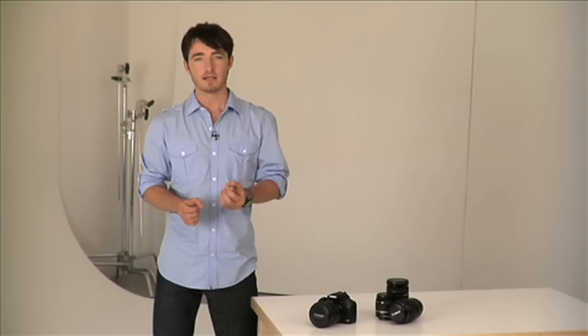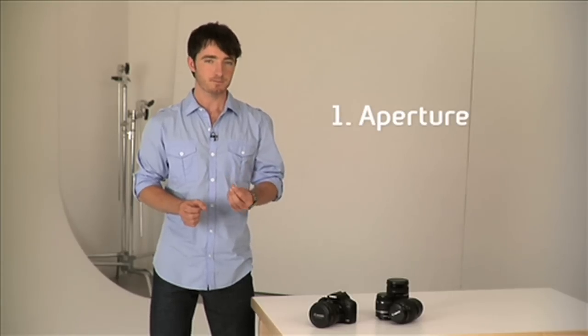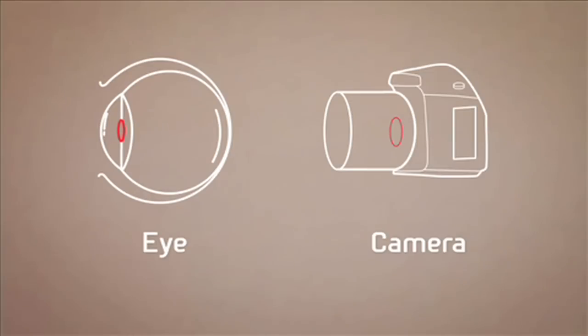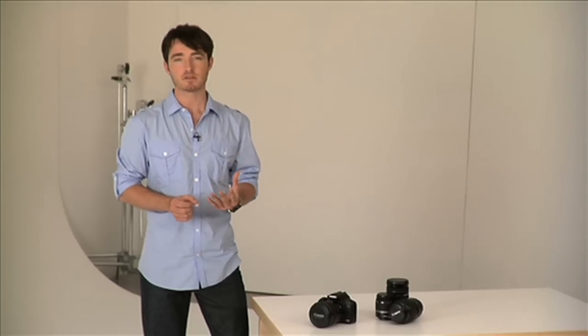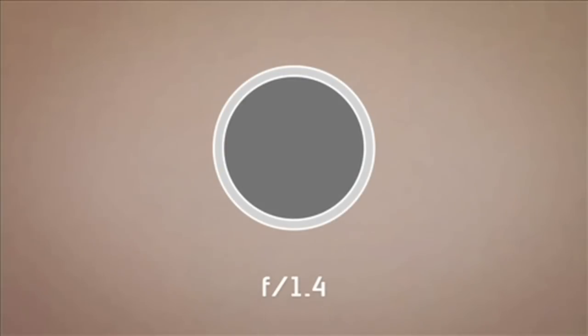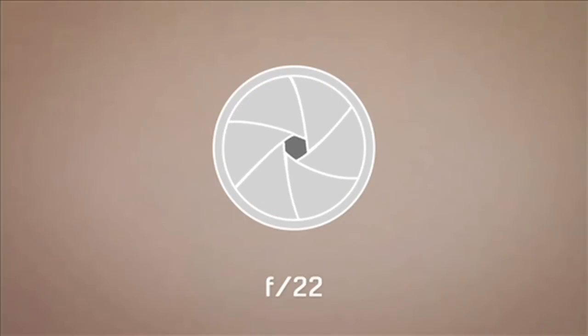A good way to think of this is by comparing them to the way your eye works. With that in mind, let's first define aperture. This is a measurement of how wide the hole in the back of the lens opens to allow light in — you can think of it as the iris in your eye. Aperture values are expressed in numbers called f-stops. A smaller f-stop number means more light is coming into the camera. For example, f1.4 lets in a lot more light, whereas f22 is like a pinhole.